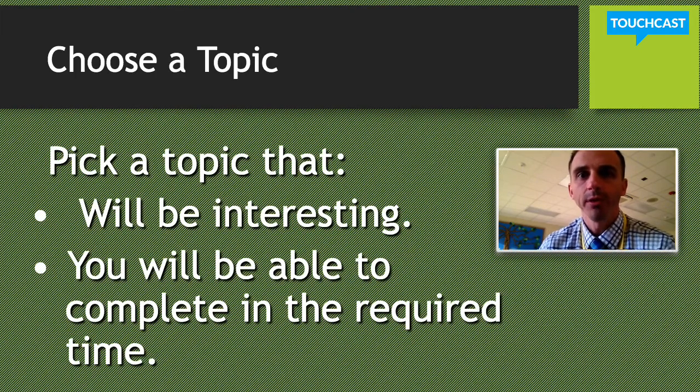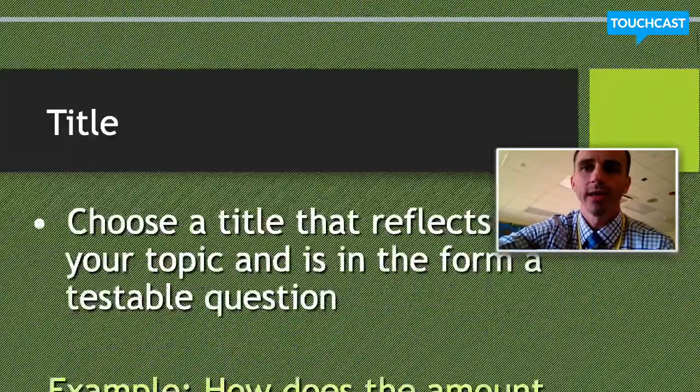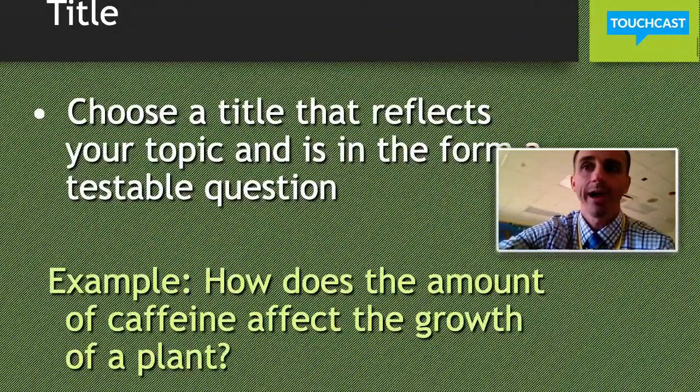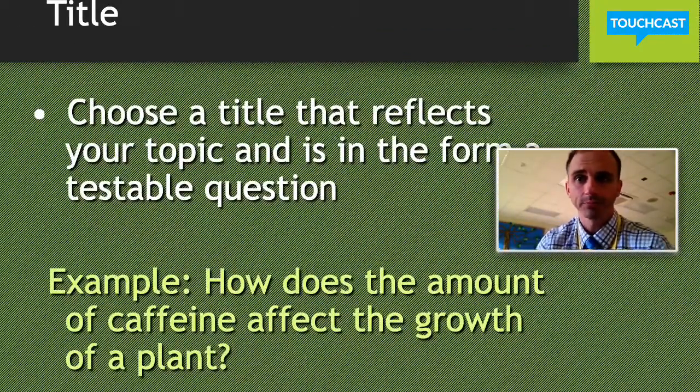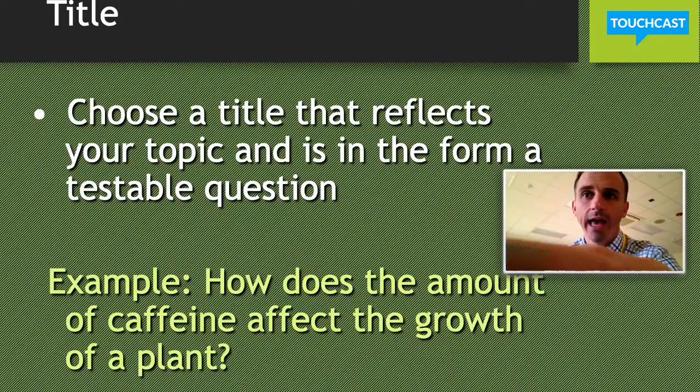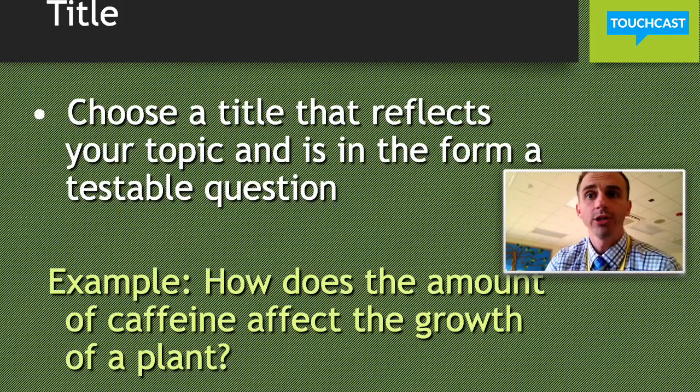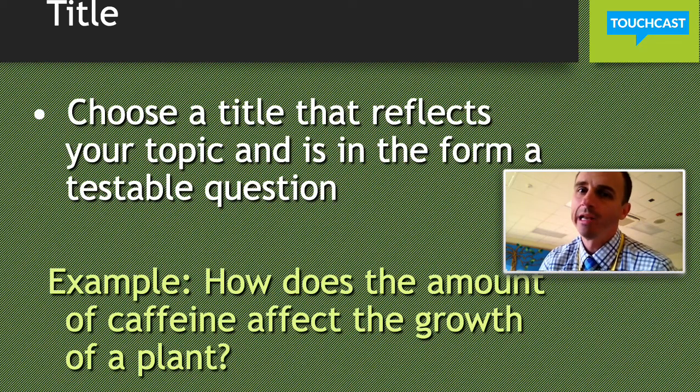And then after you choose your topic, you want to start, which is basically the first step in the scientific method, which is writing a question. But in your question, your question actually becomes a part of your title. So when you're writing a title for your project, you want to choose a title that reflects your topic and is in the form of a testable question.